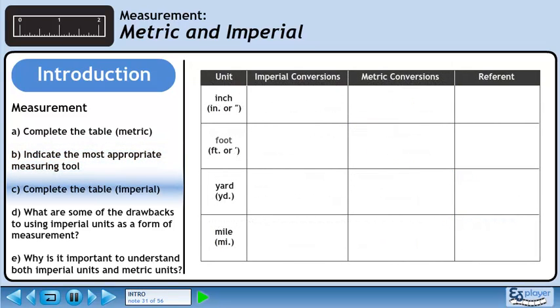In Part C, we'll learn about imperial units. The inch is the smallest imperial unit commonly used. One inch is 2.54 centimeters. One inch is roughly the distance from the middle thumb joint to the tip of the thumb.